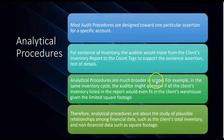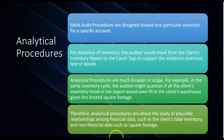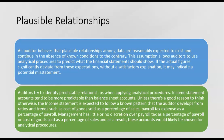Analytical procedures can be broader in scope instead of just testing one specific assertion for one account. In the same inventory cycle, the auditor might question if all the client's inventory listed in the report would even fit in the client's warehouse, given the limited square footage. That question is more about the relationship between how big the client's warehouse is and how much inventory the client says they're holding. Analytical procedures are about the study of plausible relationships among financial data, such as total inventory, and non-financial data, such as square footage of the warehouse.